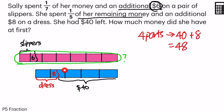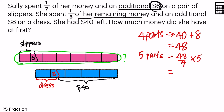So if I found out these 4 parts, I can find out the entire chunk here including the dress, which is 5 parts. So 5 parts is equal to 48 divided by 4, times 5, which is equal to 12 times 5, equals $60. So now I know this entire portion is $60.